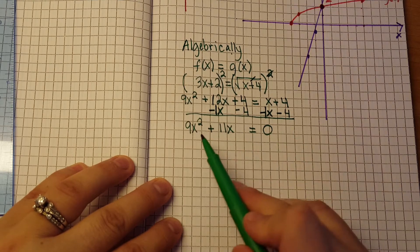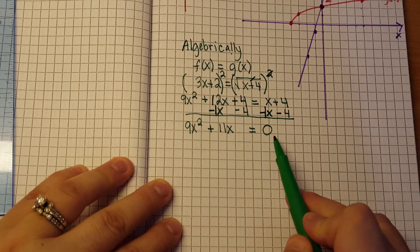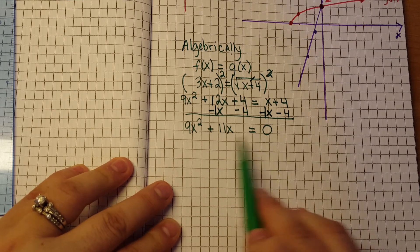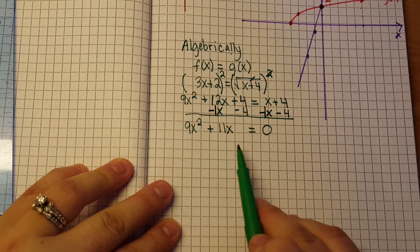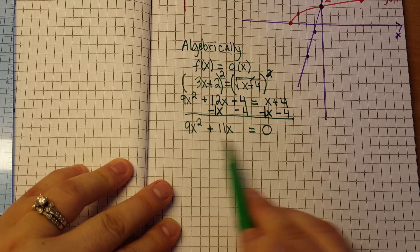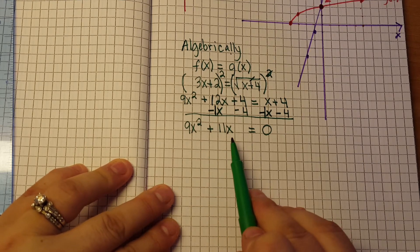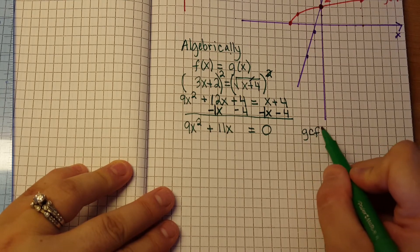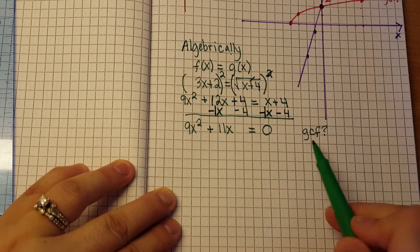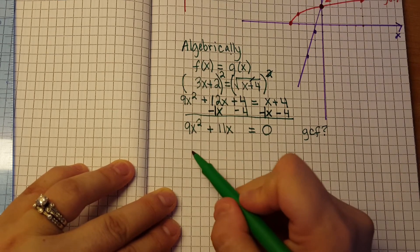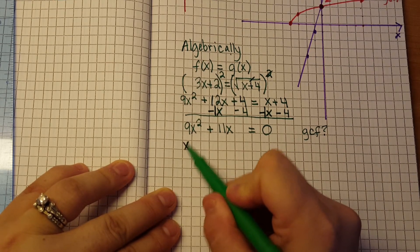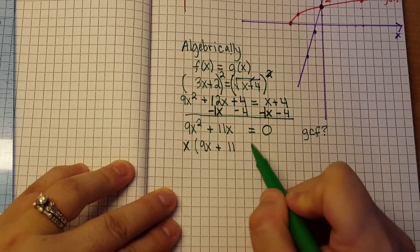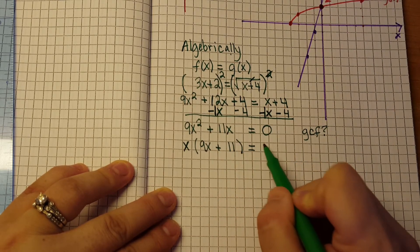Alright so we have 9x squared plus 11x is equal to 0. Clearly at this point we need to factor. So we need to go through what we've learned about factoring. We don't have 3 terms, we only have 2 terms in this case, so let's see if we can find a GCF. Is there a GCF in this particular case? Well there is, there is a greatest common factor. We can take out a x. And then we end up with 9x plus 11, close parenthesis, is equal to 0.